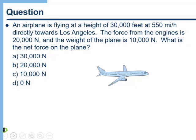Let's look at a conceptual question. An airplane is flying at a height of 30,000 feet at 550 miles per hour directly towards Los Angeles. The force from the engines is 20,000 newtons and the weight of the plane is 10,000 newtons. What is the net force on the plane? Go ahead and pause the video and see if you can figure this out.